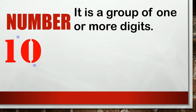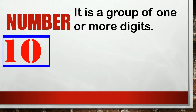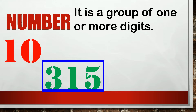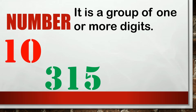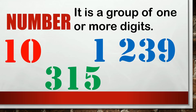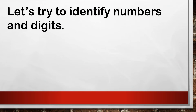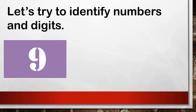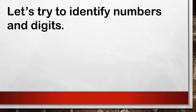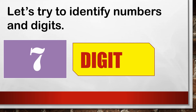For example, 10 is a combination of one digit and zero digit. 315 is a combination of three digit, one digit, and five digit. 1,239 is a combination of one digit, two digit, three digit, and nine digit. So, for example, we can say that nine is a digit, one hundred fifty-six is a number, twenty-five is a number, and seven is a digit.